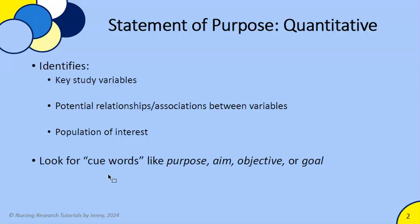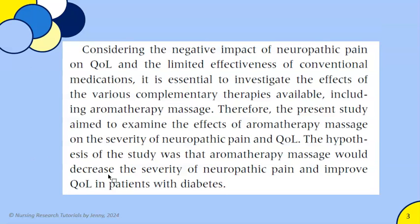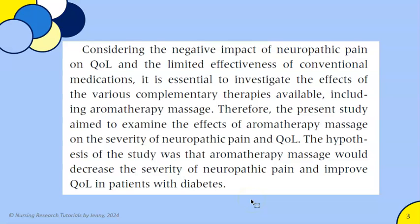Here's an example of a quantitative study and what the abstract would look like. We see the keyword 'aim' — these researchers were aiming to examine the effects of aromatherapy massage on the severity of neuropathic pain and quality of life. Earlier in the article they explained the background, reviewed published literature, and explained what the acronyms meant. You also see a hypothesis here. If there is going to be a hypothesis or specific research questions, they're typically located around the same area, right around the purpose, aim, or objective of the study — typically at the very end of the introduction.